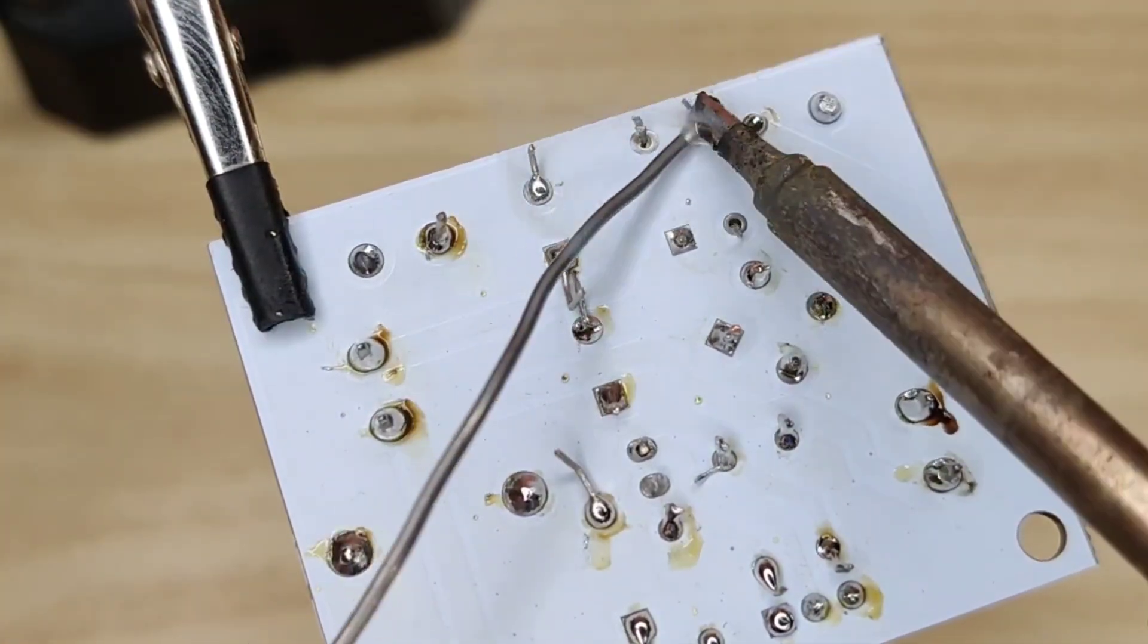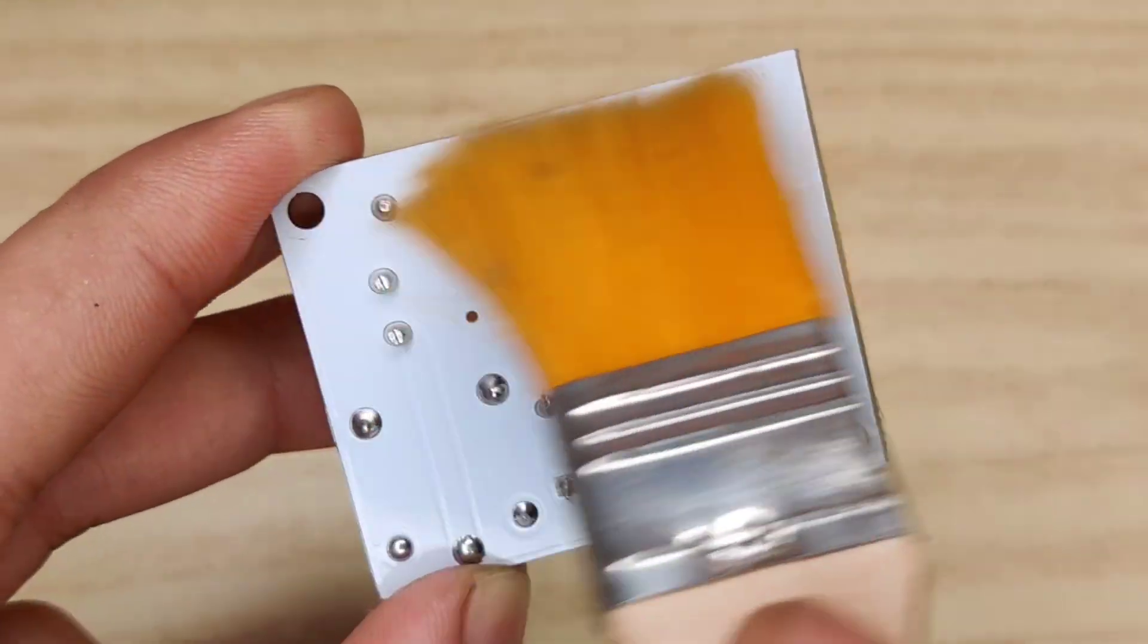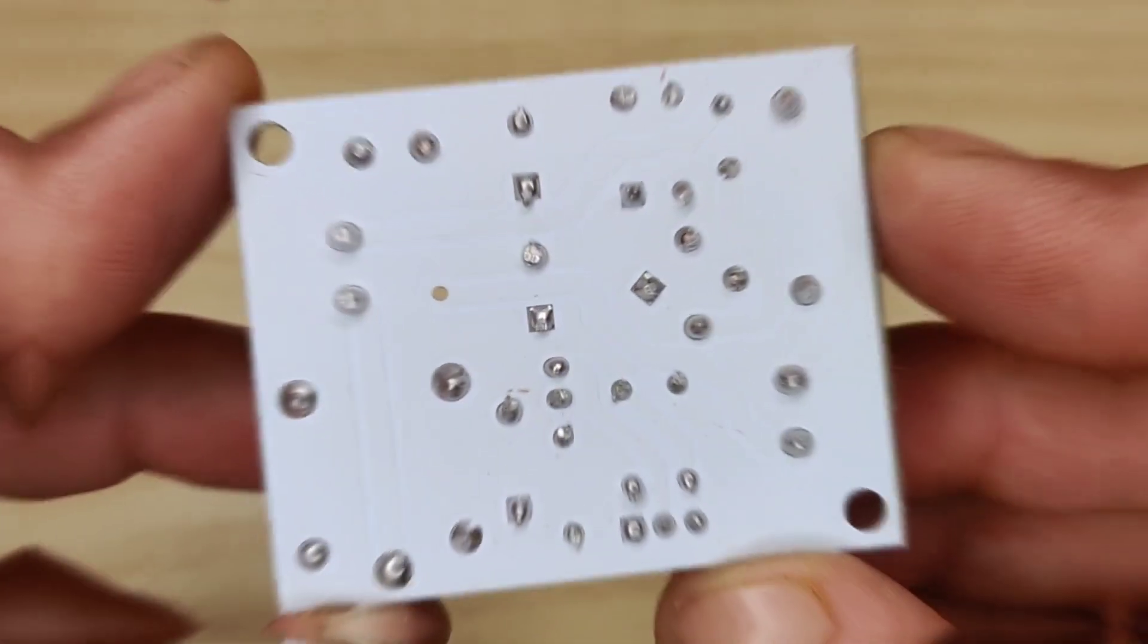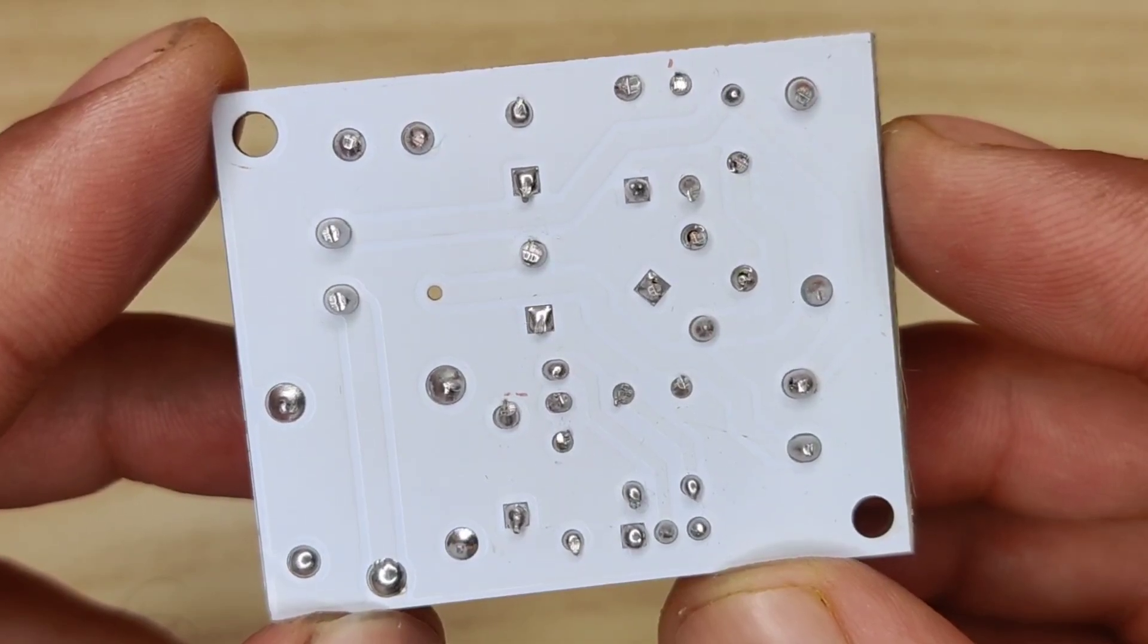And after spending some time with the soldering process, I cleaned the PCB with isopropyl alcohol. And here our PCB is looking nice and clean.